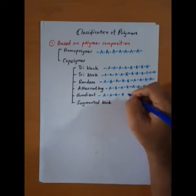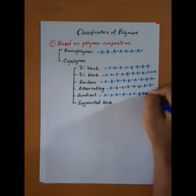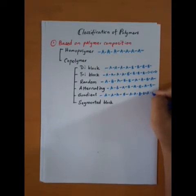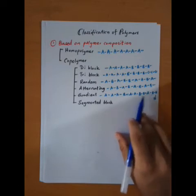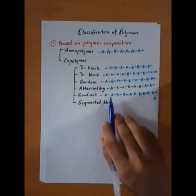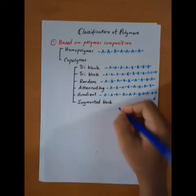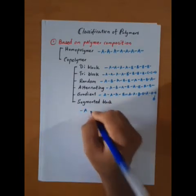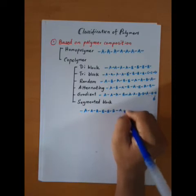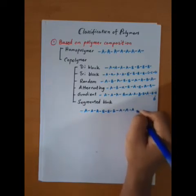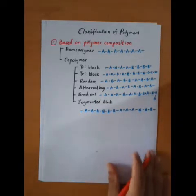In a gradient copolymer, the number of A monomers decreases while the number of B monomers increases along the chain, creating a gradient. These are called gradient copolymers. Segmented block copolymers are another type. This completes the classification based on polymer composition.